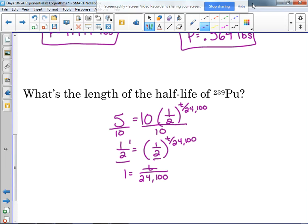So the exponent over here is one. So that means the half-life is 24,100 years. It takes 24,100 years for half of that material to decay.